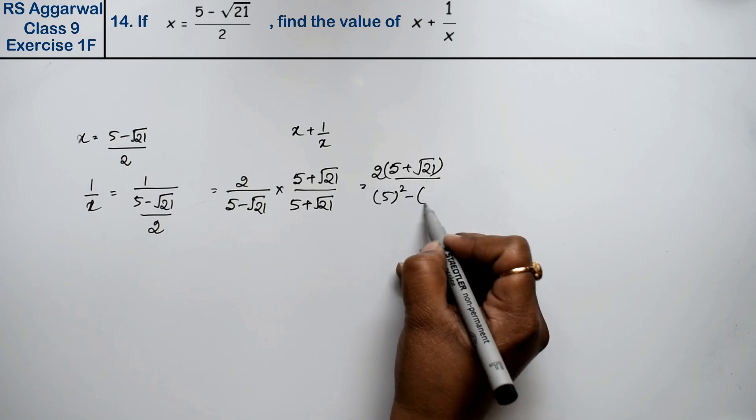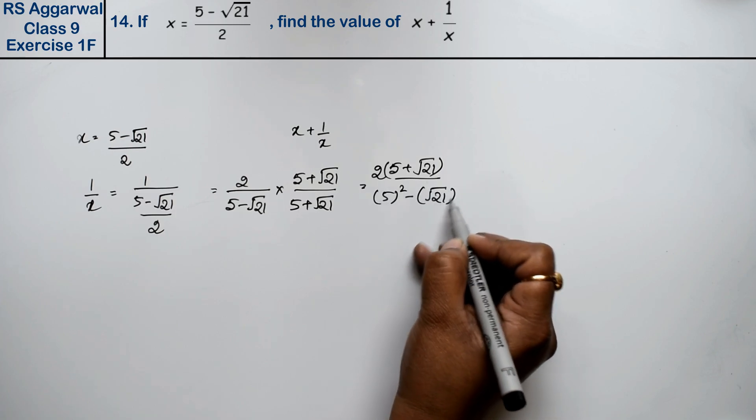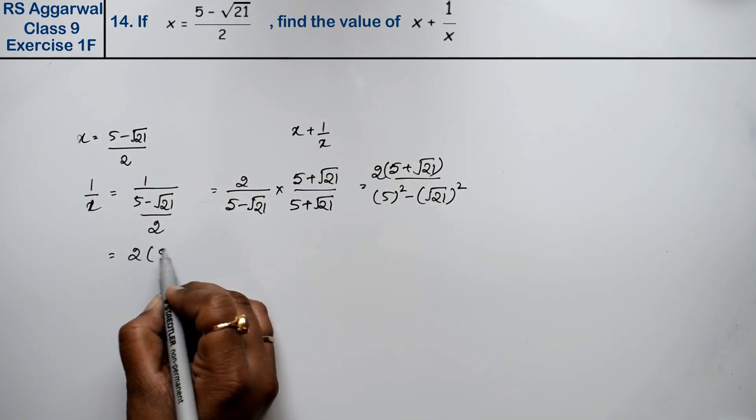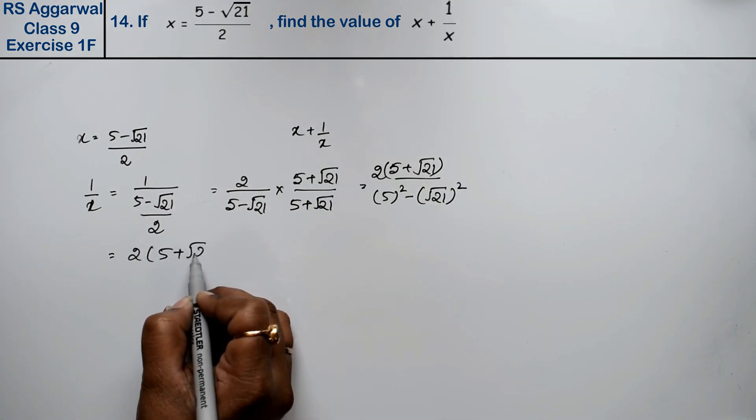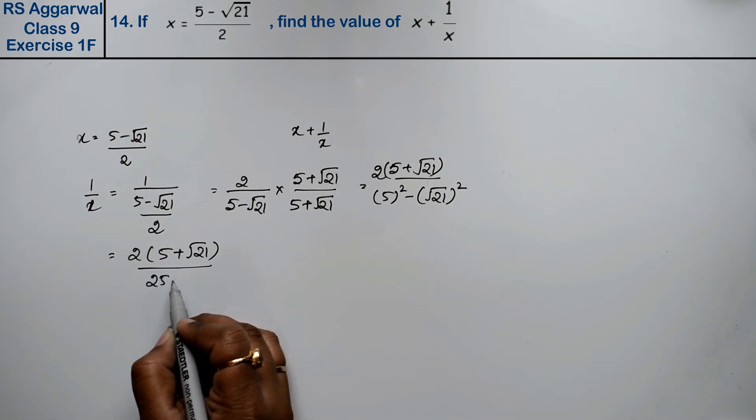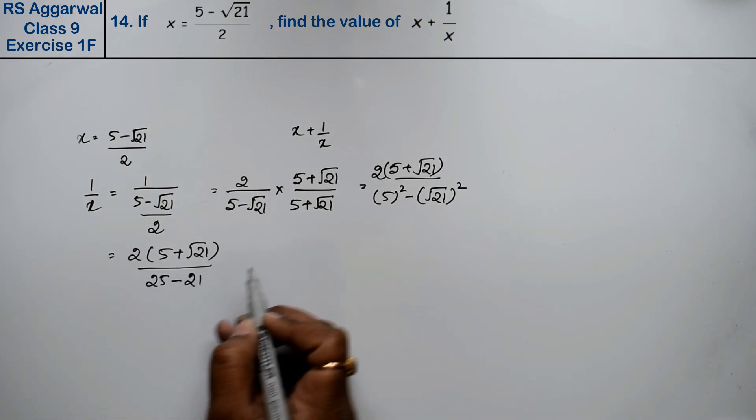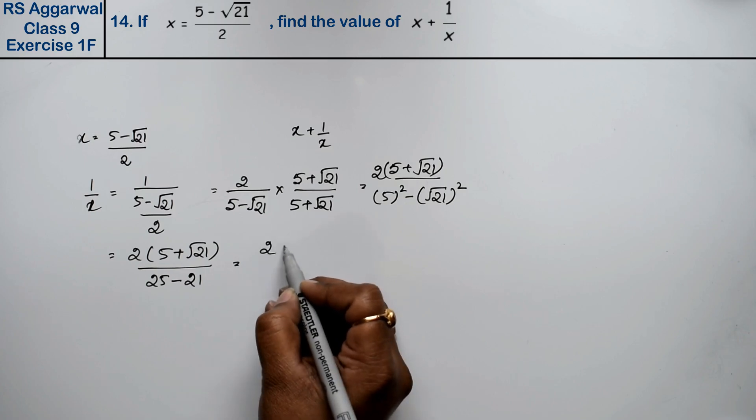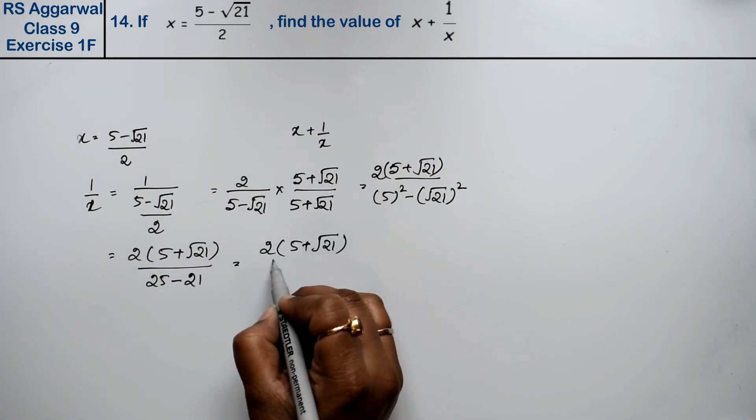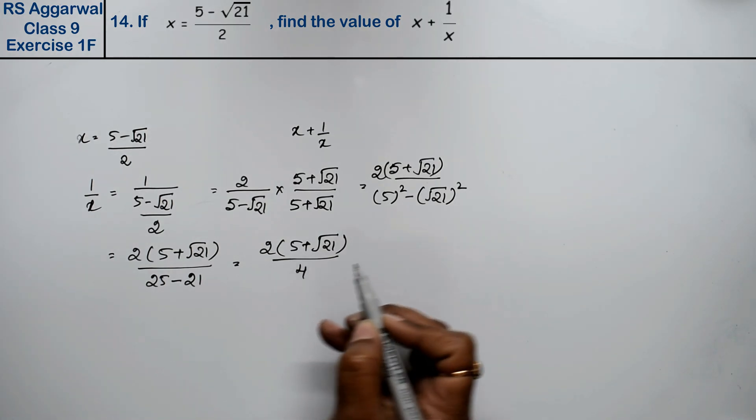The denominator becomes 25 - 21 = 4. So we have 2(5 + √21)/4. We can factor out the 2 from numerator and denominator.